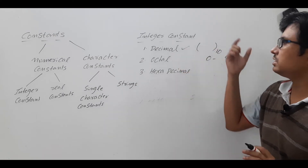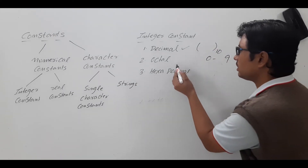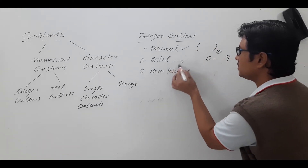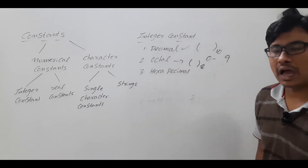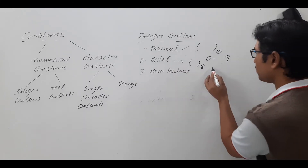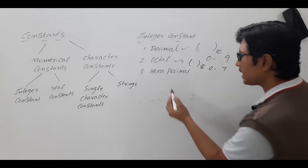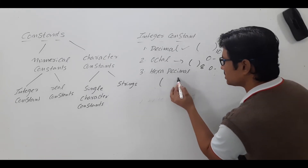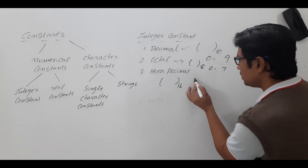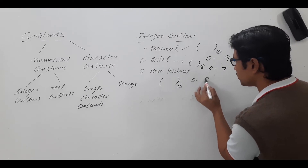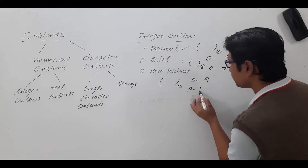One is decimal, and another is octal which is base 8 — so you have digits from 0 to 7. Then you have hexadecimal which is base 16 — you have digits from 0 to 9 and then A to F.